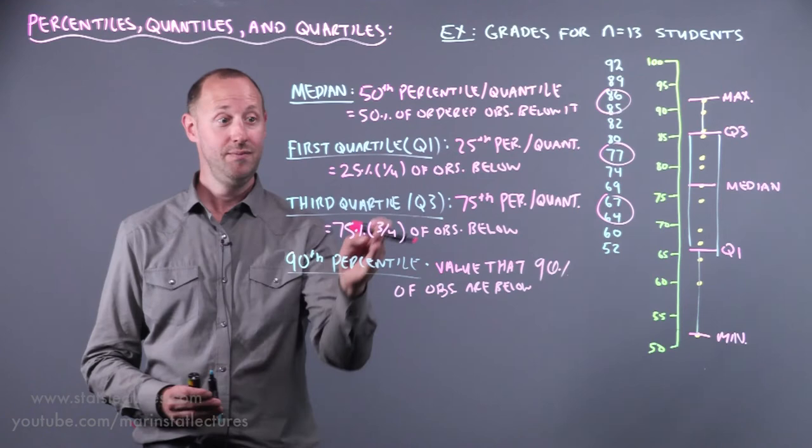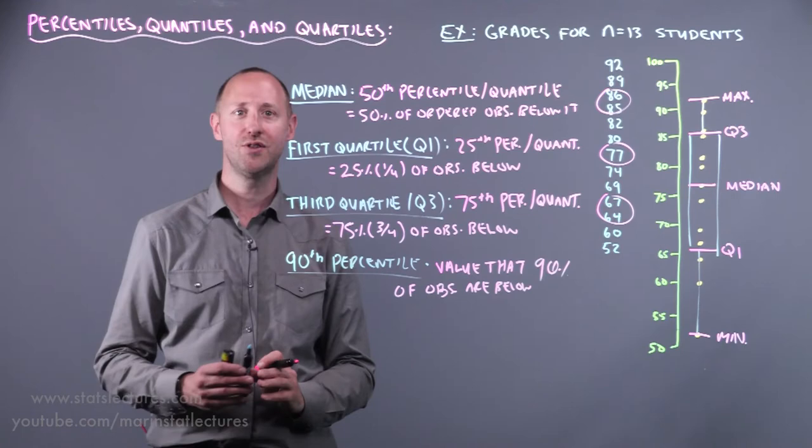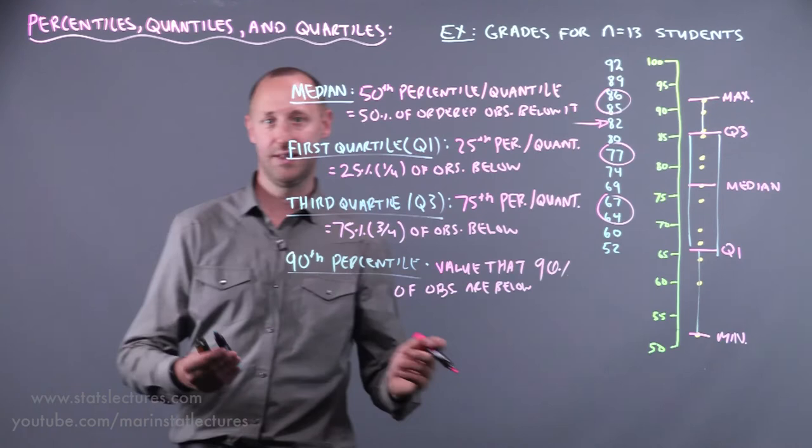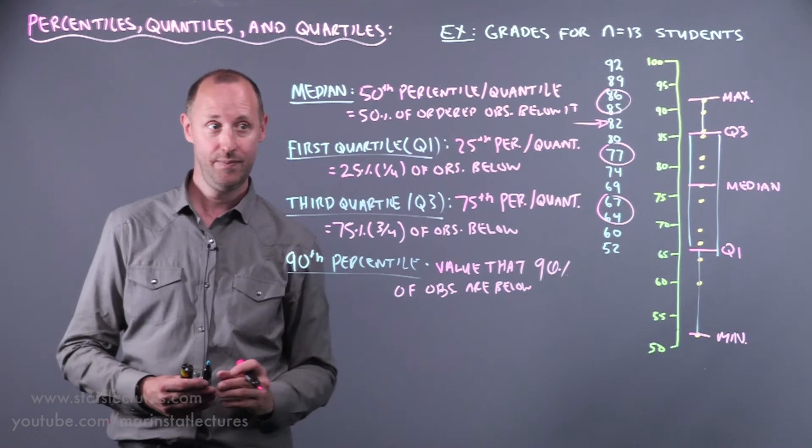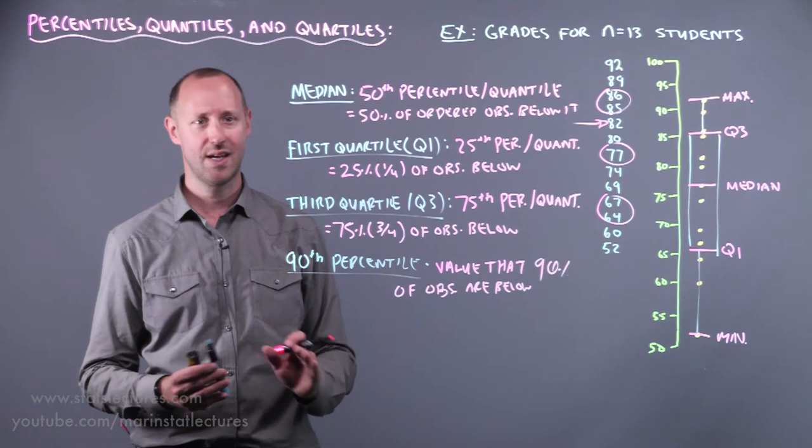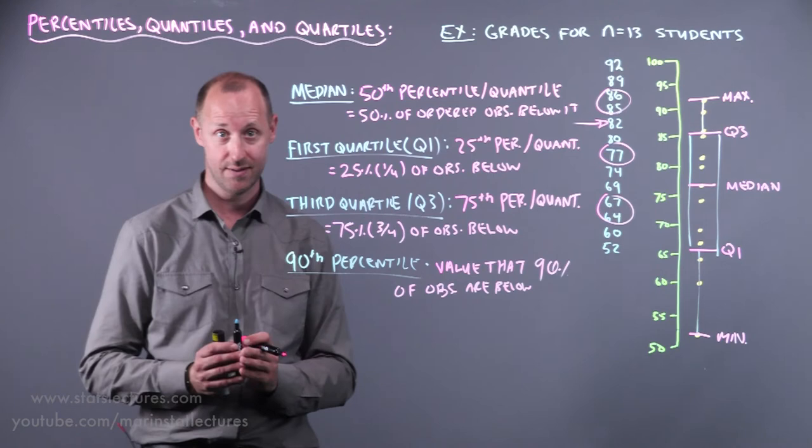We can also look at the other direction. We might take an observed value, say something like this here, the 82, and try and decide what percentile is that value. In other words, if I told you that someone scored a grade of 82, it's really hard to know is that a high grade or a low grade. You need to know what was the average. You also need to know how spread out are things.